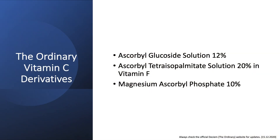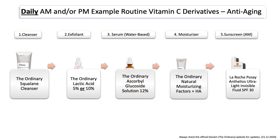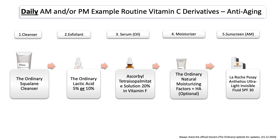Now let's talk about The Ordinary vitamin C derivatives. Currently The Ordinary has three vitamin C derivatives: ascorbyl glucoside solution, ascorbyl tetraisopalmitate solution in vitamin F, and magnesium ascorbyl phosphate. They all have different formulations, so it's important to know how to properly layer them and in what order. Starting with ascorbyl glucoside solution—a water-based vitamin C derivative serum—you can use it after lactic acid and before your moisturizer. If you want to use the vitamin C derivative that is an oil-based formula, it would look a little different, but you can still combine it with lactic acid 5% or 10%. In the morning, don't forget your sunscreen.